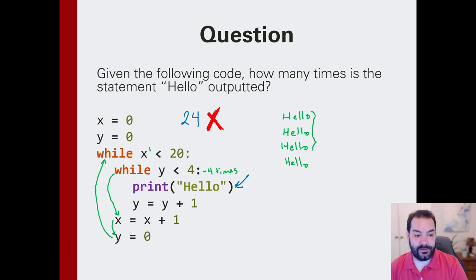So this occurs, in our case, not 24, 20 times. Hello is printed four times, 20 times. So if we're answering this question, 20 times 4 would equal 80 printouts.